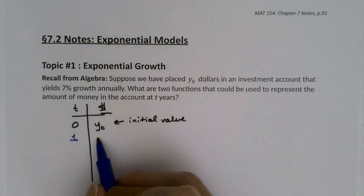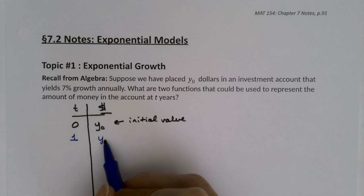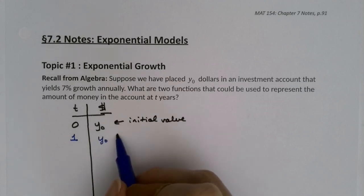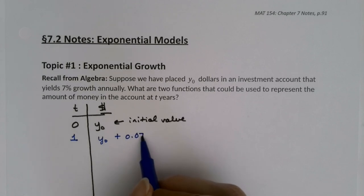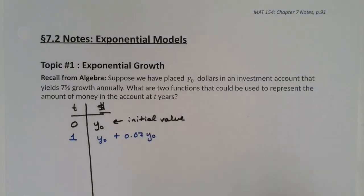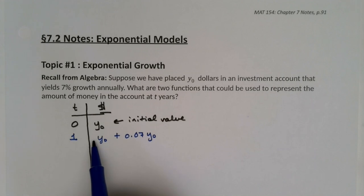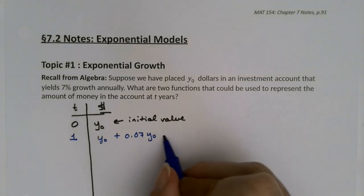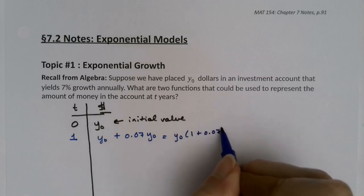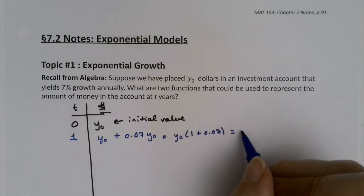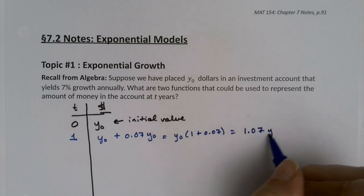At time one, we would take Y-zero and multiply it: Y-zero plus another 0.07 times Y-zero. That's one Y-zero plus 0.07 Y-zero, which means you have Y-zero times one plus 0.07 — in other words, 1.07 times Y-zero. That's usually the way we mathematically write it.